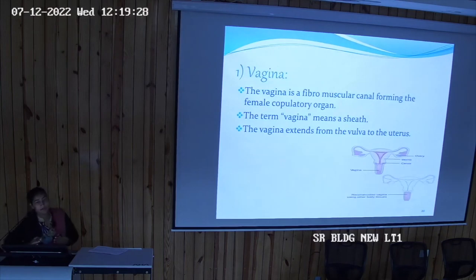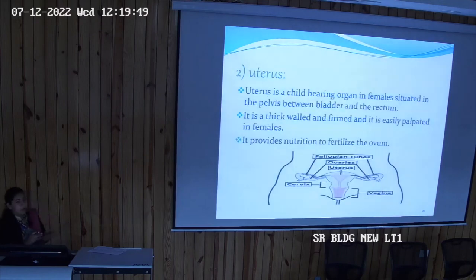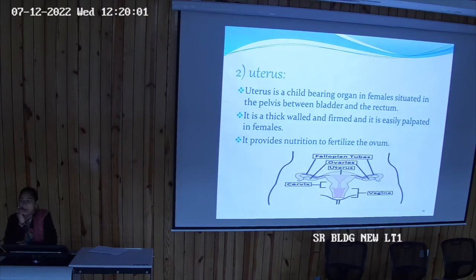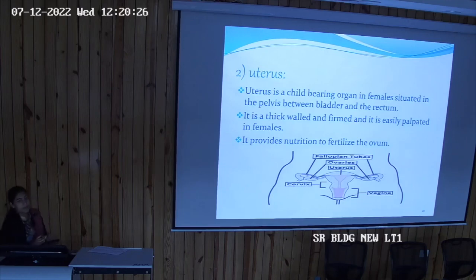The vagina is a part of the female reproductive system which is a fibromuscular canal forming the copulatory organ of females. It extends from the vulva — that is the external genitalia — to the cervix, which is a part of the uterus. The uterus lies in the pelvis and is sandwiched between two organs: anteriorly the urinary bladder, and posteriorly the rectum — the GIT part.